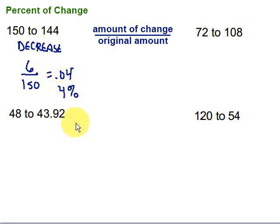4 percent decrease. Let's take a look at this next one over here where we have it going from 72 to 108. Well that would be a percent of increase because we're going from 72 and going larger to 108. So percent of increase. And to find out exactly how much that is we need to know the difference between 72 and 108. That would be, let's see, 36.